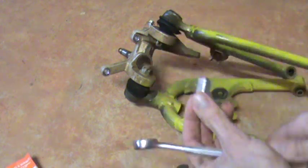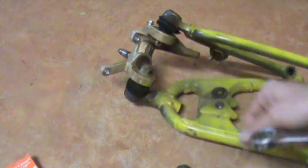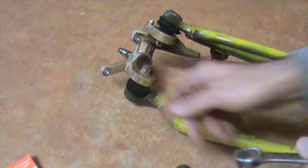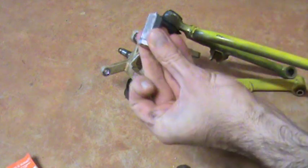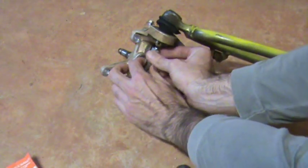So all you do is you loosen your castle nuts here on your spindle. Loosen but you don't remove. Then you take this, thread it all the way in and fit it between.